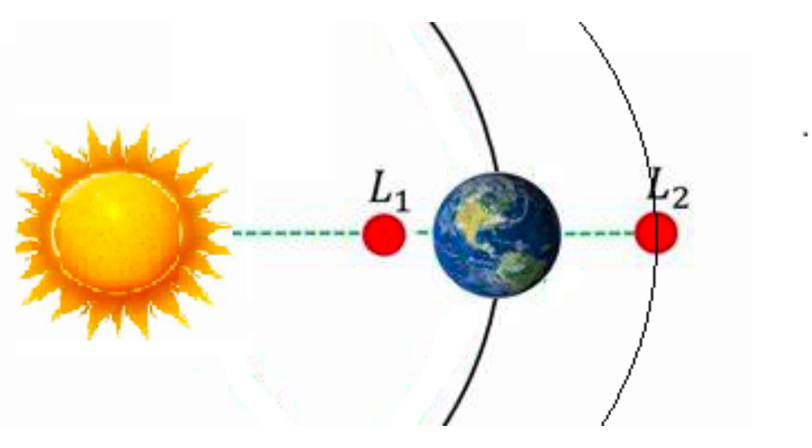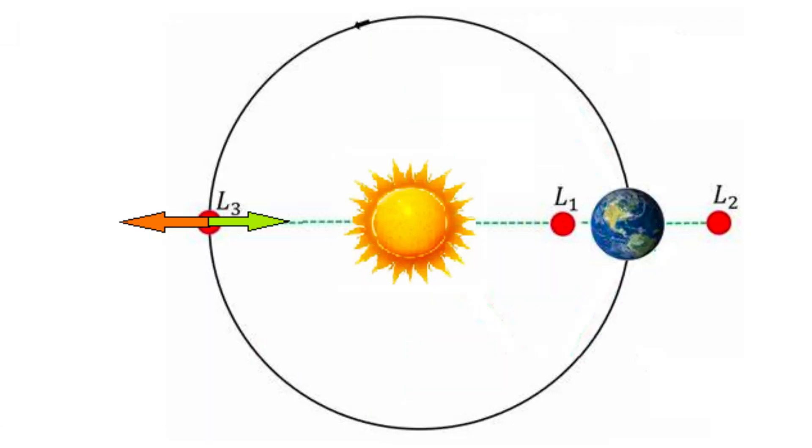L2 is located on the opposite side of the smaller body, let's say Earth. In this case, the centrifugal force opposes the gravitational pull of both the Sun and Earth. The same is true for L3, but this point is on the opposite side of the Sun.